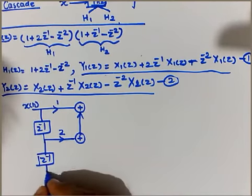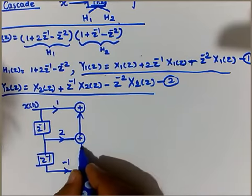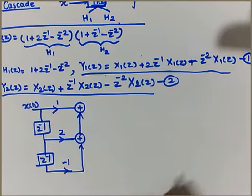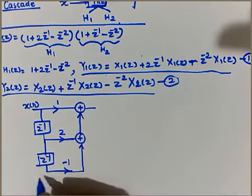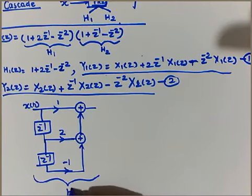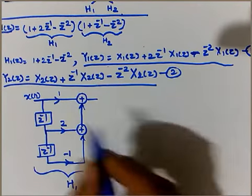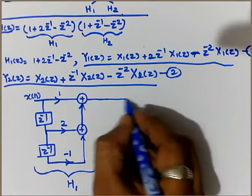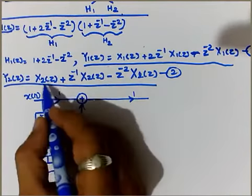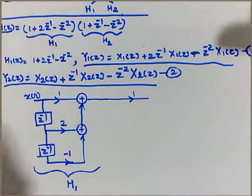Next is -z^-2, so again I will add here one more z^-1 block. Since it is minus, so minus 1 and add it. This is how y1 is done. This entire portion is nothing but for h1. Now what about h2? Again use this extension to the further part.